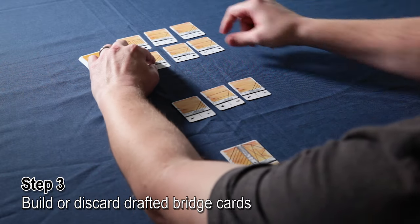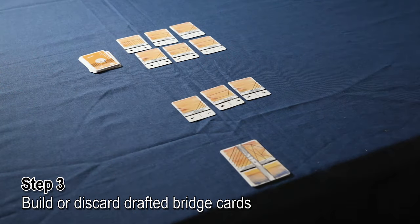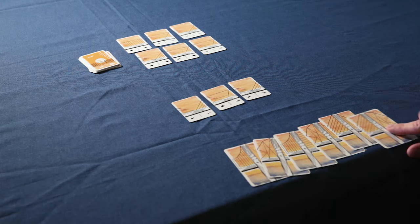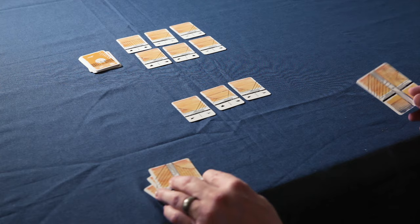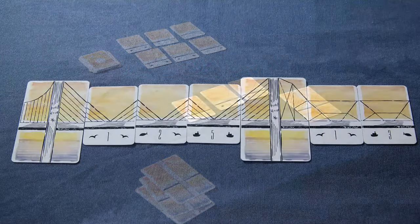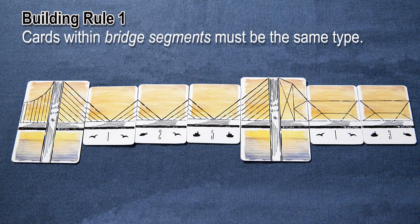During the building phase, players use the three cards they drafted to build their bridge. Any not used are discarded at the end of the round. Your bridge must begin with a pillar. Once you've placed the pillar, you can attach bridge cards to it. Bridge cards can only be attached to pillar cards or other bridge cards matching their type. These are called a bridge segment, and that's important for building and scoring later.